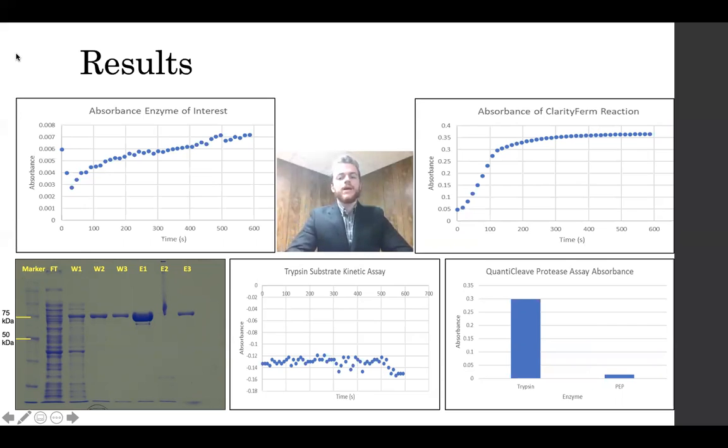So to find out if everything was working, this was compared to ClarityFirm, a slow-acting PEP known to work from A. niger. And the results there are shown in the top right. As you can see, there is much greater absorbance and a much cleaner shape to the curve.